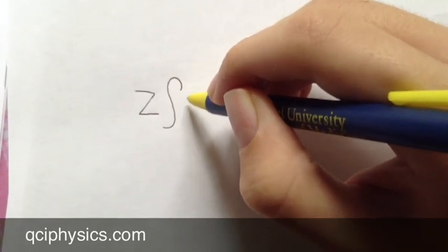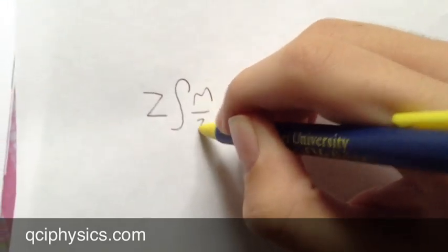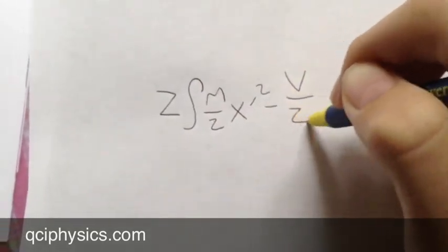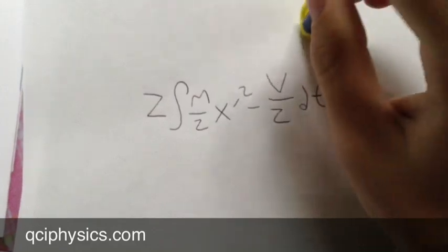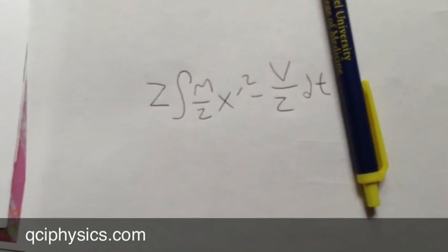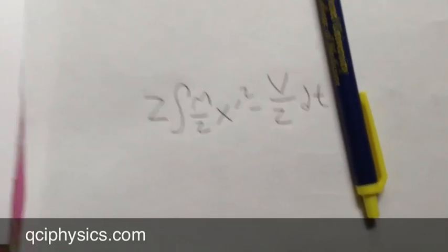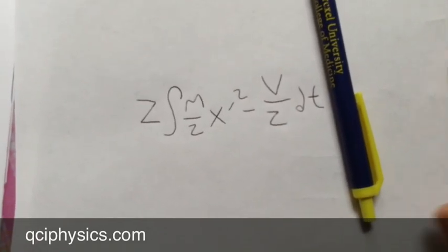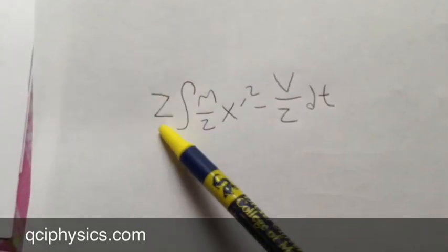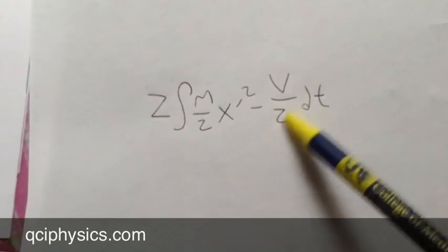the same as if we would just use a natural integer number of time slices, but instead use an action defined by z times the integral of m over 2 x prime squared minus v over z dt. And so essentially what that means is that this process is equivalent to simply using an integer number of time slices like what is standard, but instead using this action. This action given by a z in front of the standard action and also a 1 over z in front of the potential.